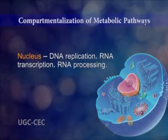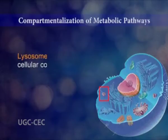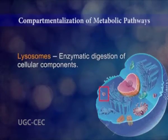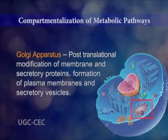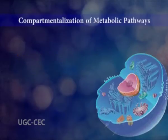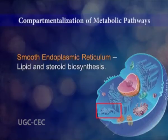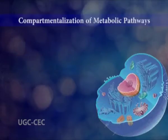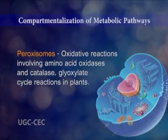And in the nucleus, DNA replication, RNA transcription, and RNA processing mainly occur. And in lysosomes, enzymatic digestion of cellular components happens. And in the Golgi apparatus, post-translational modification of membrane and secretory proteins, formation of plasma membranes and secretory vesicles occurs. And in rough endoplasmic reticulum, the synthesis of membrane-bound and secretory proteins occurs. And in smooth endoplasmic reticulum, lipid and steroid biosynthesis happens. And in peroxisomes, oxidative reactions involving amino acid oxidases and catalase, glyoxylate cycle reactions in plants, happen.